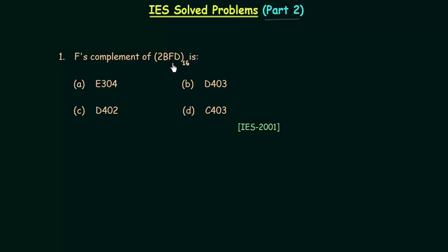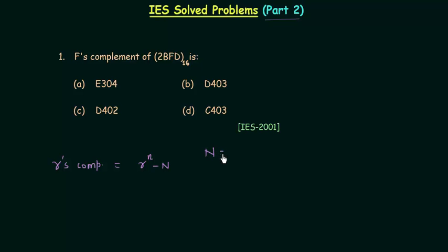It is a hexadecimal number, and if you remember, in case of R's complement, we have r raised to power n minus capital N, where capital N is the number whose R's complement we have to calculate. So in this case the number is 2bfd, and small n is the number of digits.